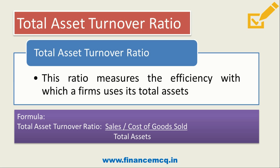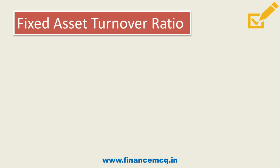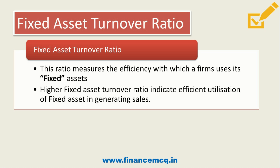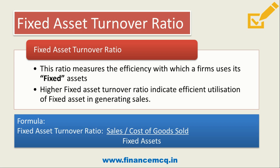The fixed asset turnover ratio measures the efficiency with which a firm uses its fixed assets. A higher fixed asset turnover ratio indicates efficient utilization of fixed assets in generating sales — basically, how much sales is generated from one rupee of fixed assets. The formula is sales upon fixed assets, or cost of goods sold upon fixed assets, whichever is given.